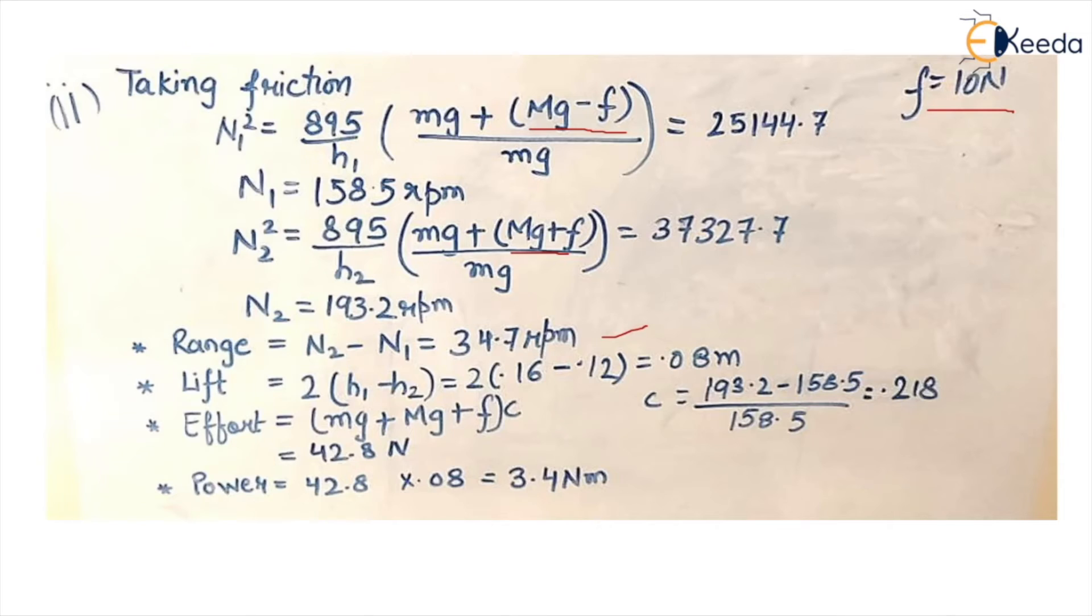So why this lift is 2 h1 minus h2? Because in a governor when all the arms are equal, lift of sleeve is twice the variation of height of the governor. Therefore it is twice of h1 minus h2 and the value is similar as in the first case because h is depending upon, as per the Pythagoras theorem, the radius of rotation and the length of the arms which is not changing.